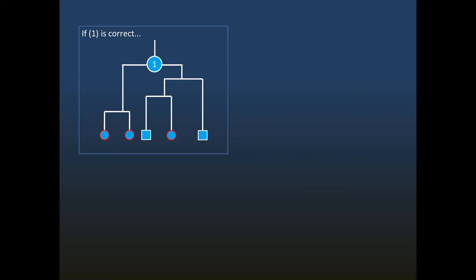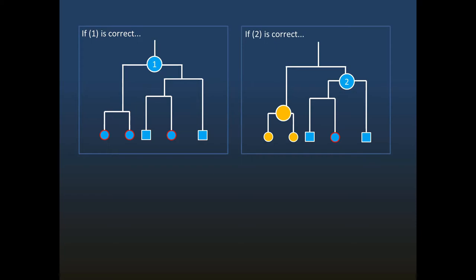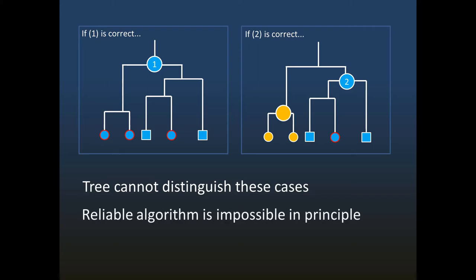If number 1 is the correct LCA, then three of the environmental sequences belong to the blue group, shown with red outlines. On the other hand, if number 2 is the correct LCA, then only one of the environmental sequences belongs to the blue group, and we can infer that we should add a new group, shown here in orange. This group does not have the characteristic traits of the blue group, but has not yet been studied or named by taxonomists. There's not enough information in the tree to distinguish whether node 1 or node 2 is the correct LCA, so a reliable algorithm based solely on the tree is not possible in principle, even if the tree is correct.